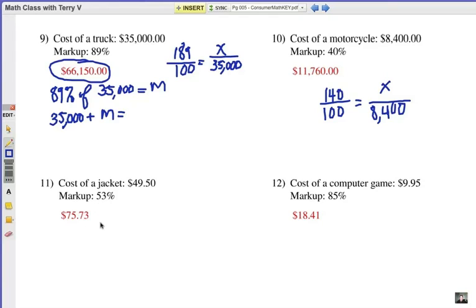On number 11, if the markup is 53%, you are going to sell it for 153% of its original cost to you, original value. And that equals x over 49.50.